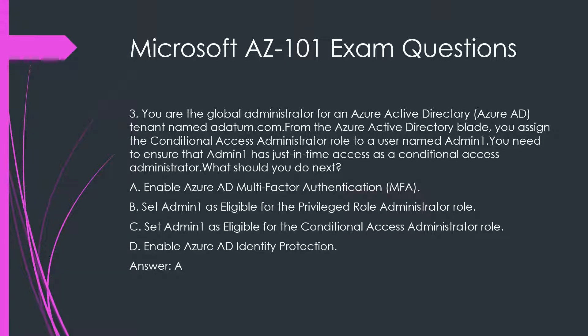Question 3. You are the global administrator for an Azure Active Directory tenant named Adatum.com. From the Azure Active Directory blade, you assign the Conditional Access Administrator role to a user named Admin1. You need to ensure that Admin1 has just-in-time access as a Conditional Access Administrator. What should you do next?